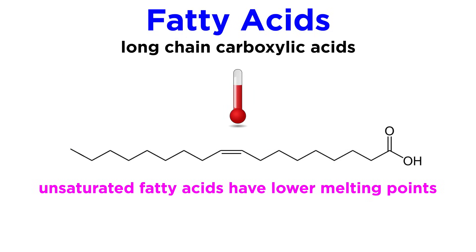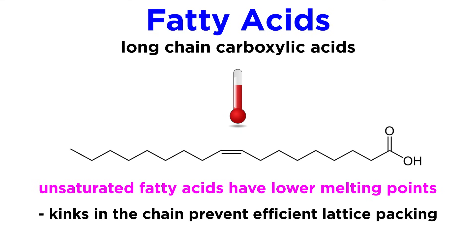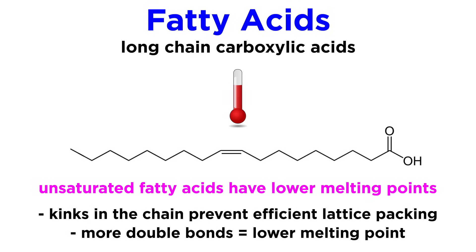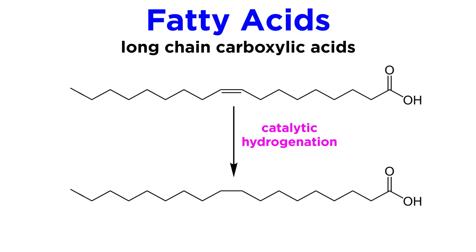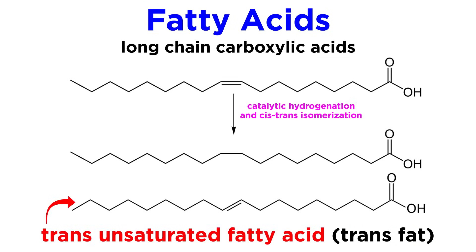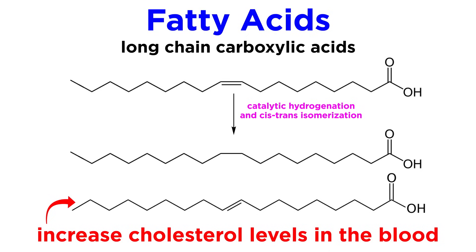Unsaturated fatty acids have lower melting points because of the Z configuration of the double bonds. This causes kinks in the chains that makes it harder for these molecules to pack neatly into a lattice, so it's easier to melt them. The more double bonds present, the lower the melting point. The pi bonds are easily reduced by catalytic hydrogenation to yield saturated fatty acids, which is how we produce margarine. This process is accompanied by cis-trans isomerization of some double bonds that don't get hydrogenated, generating trans-unsaturated fatty acids, or the so-called trans fats. These can increase the cholesterol levels in the blood, resulting in unwanted health effects that can increase the risk of heart problems.